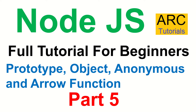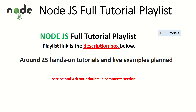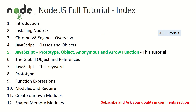In the previous episode we learned about classes and objects, so if you missed that tutorial please check it out — it's important to have the continuation of learning. Welcome back, I'm your host Sridhar. This is part five of the Node.js full tutorial playlist; there are around 25 tutorials planned in this series. Today we'll touch base on prototype objects, anonymous functions, and arrow functions.